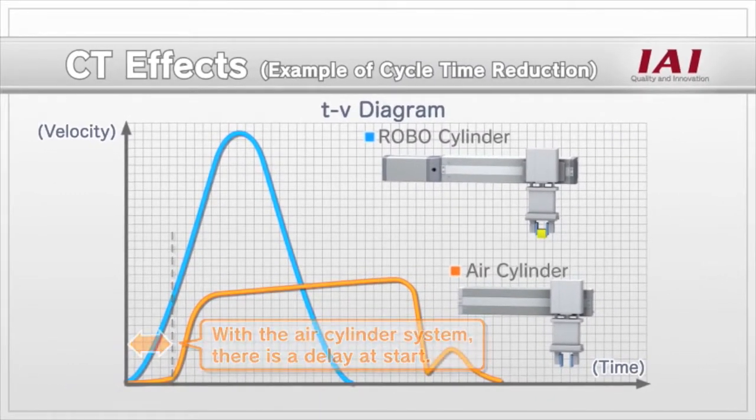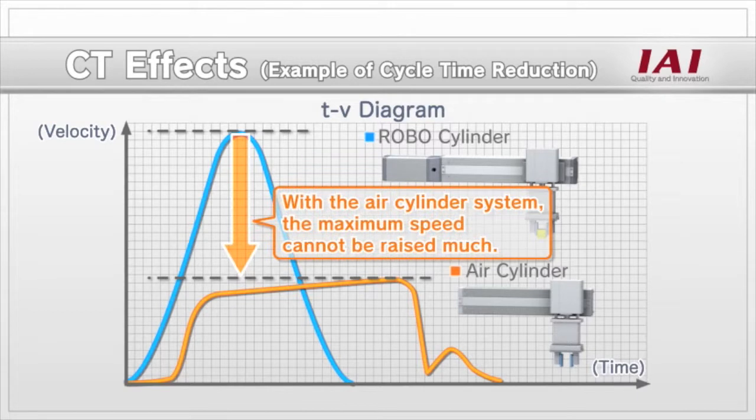Also, while the speed of the air cylinder system cannot be raised much, as doing so will produce significant shock upon stopping, the ROBO cylinder system is subject to no such shock and can be operated at high speed.